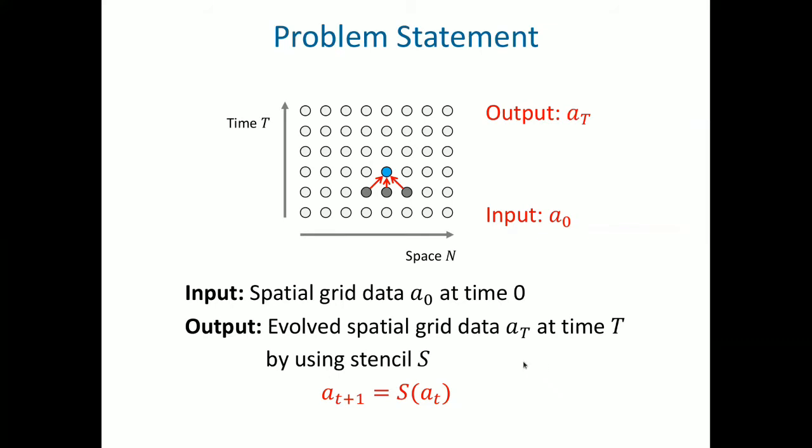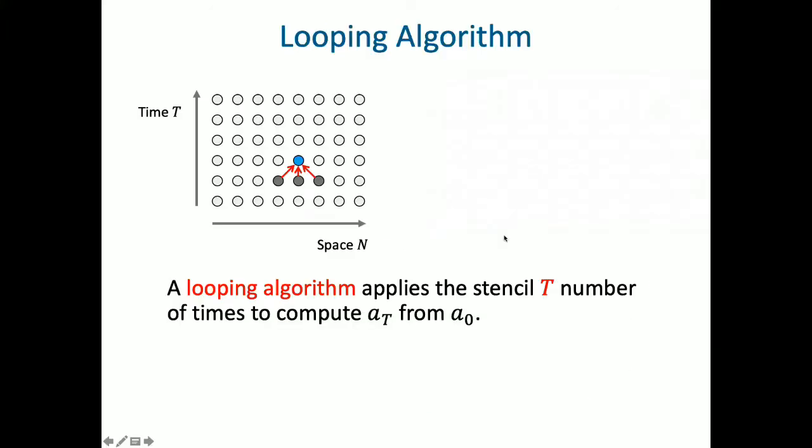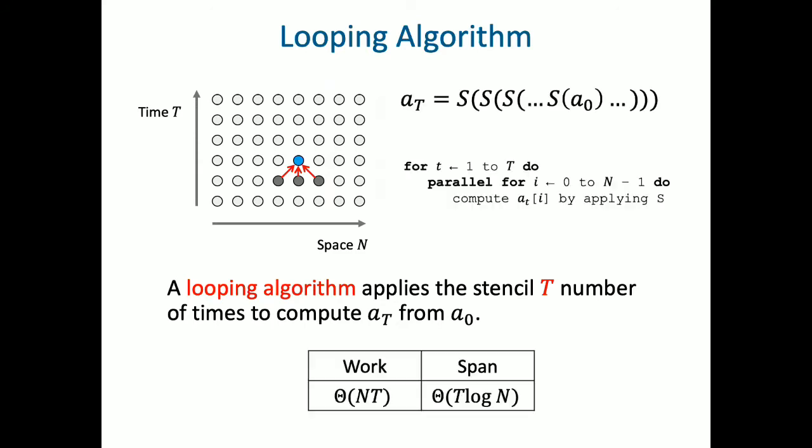Now before we go into our specific algorithms, let's talk about some theory. The simplest stencil computation algorithm is a looping-based implementation. A looping algorithm applies the stencil t number of times to compute a_t from a_0. Here, the parallelization is done in space, not over the time, which gives the t log n span, where the log n term comes from spawning n threads. The work is equal to the serial runtime, which is theta(nt).